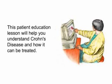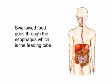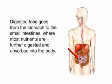This patient education lesson will help you understand Crohn's disease and how it can be treated. Swallowed food goes through the esophagus, which is the feeding tube. Next, food passes through the stomach, where it is partially digested. Digested food goes from the stomach to the small intestines, where most nutrients are further digested and absorbed into the body.